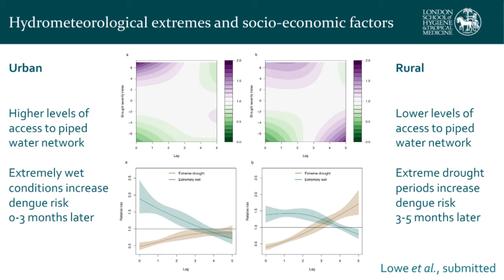We found that in urban areas, at very short lead times, extremely wet conditions exacerbate the risk of dengue, whereas in rural areas — areas with less access to a piped water network — at longer lags, drought conditions are exacerbating dengue risk. This is very interesting because we're finding similar patterns to what we found in Barbados, and there's a clear differential pattern between urban and rural areas.